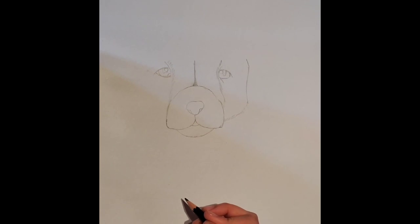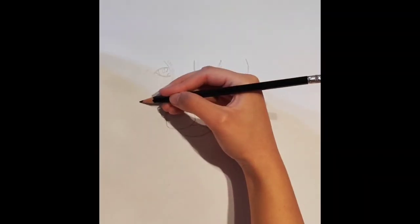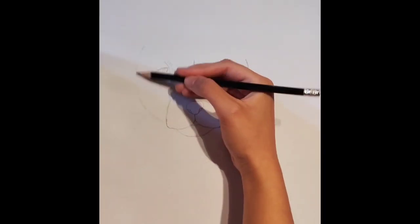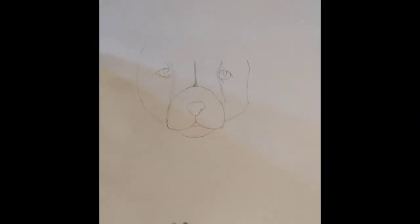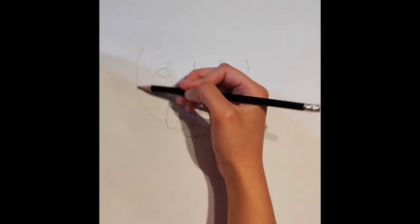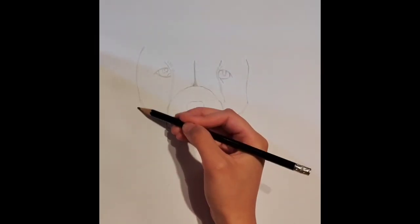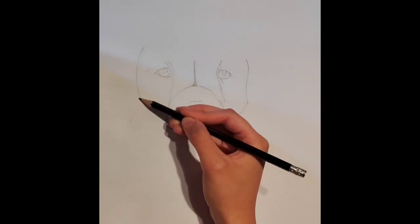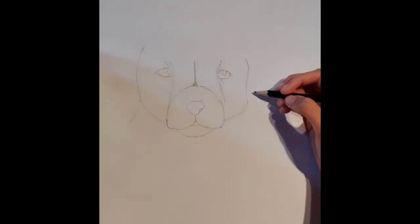Now we're going to do the same on the other side. From the curves that we created for the ears, extend a flick outwards. This will be the little flaps of the ears. Draw these out like so.